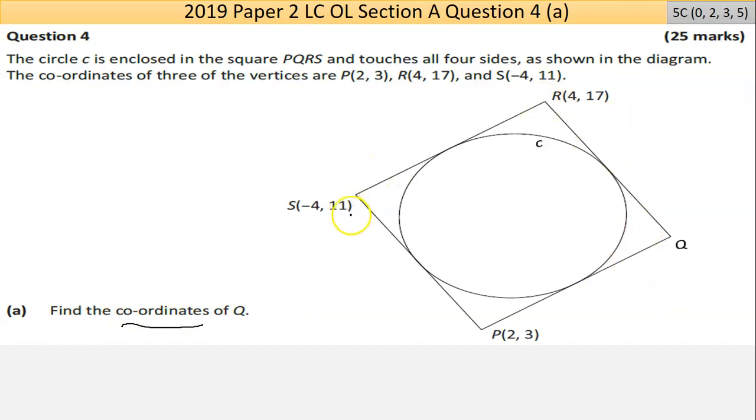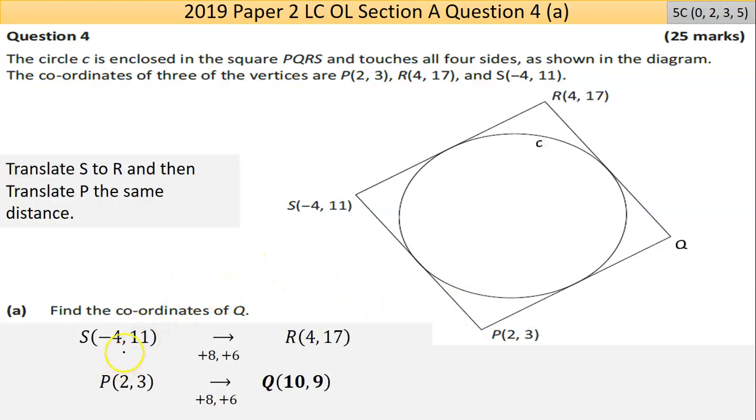This is a square, so this point moving this distance by translation is going to be the same as this point moving this way. Or I suppose you could go that way. It'll be equally as valid. So in the answer here, I forget which way I've done it. I've gone from S as far as R.